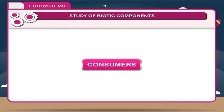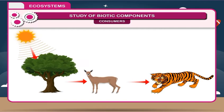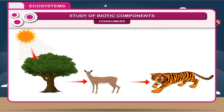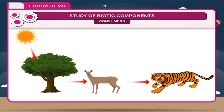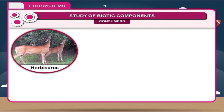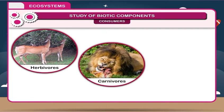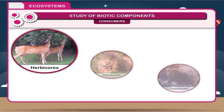Consumers are those who cannot manufacture their own food and are dependent on autotrophic organisms for their food. Consumers can be further subdivided into three groups depending on their food. These are herbivores, carnivores, and omnivores.